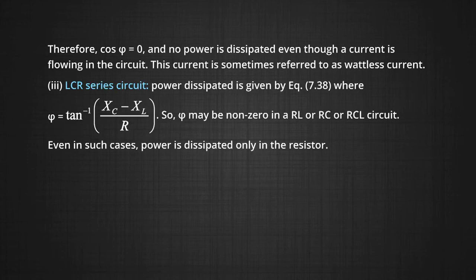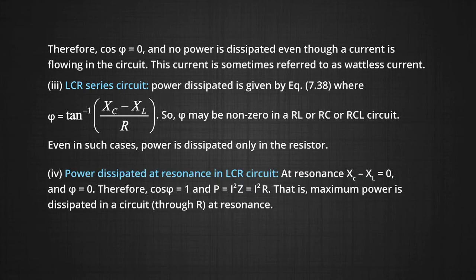Case 3: LCR circuit. Power is dissipated at a phase angle φ = tan⁻¹((Xc − XL)/R). φ may be nonzero in an RL, RC, or LCR circuit, but even in such cases power is dissipated only through the resistor. At resonance in the LCR circuit, Xc − XL = 0, meaning Xc = XL and φ = 0, so cos φ = 1 and power P = I²Z = I²R — maximum power is dissipated through R. This is the condition for resonance.